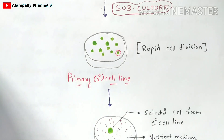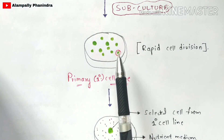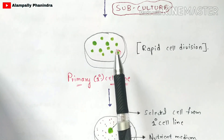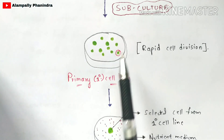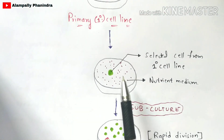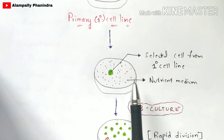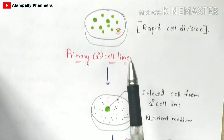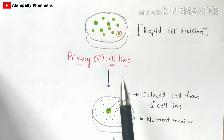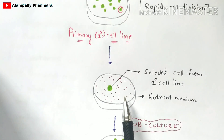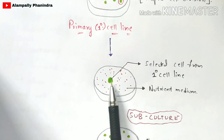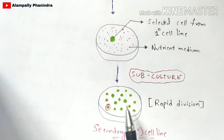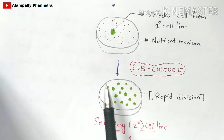Again, you repeat the same process: select one desired stem cell from the primary cell line, take another new petri plate, add fresh nutrient medium, and place the selected cell from the primary cell line into it. This cell uses all the nutrients in the medium and undergoes rapid cell division, forming the secondary cell line.